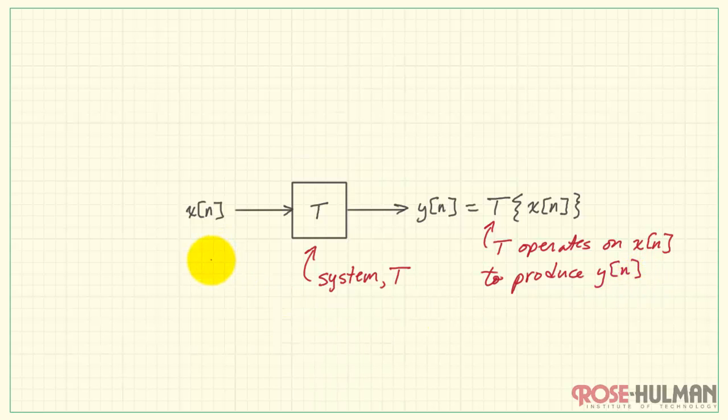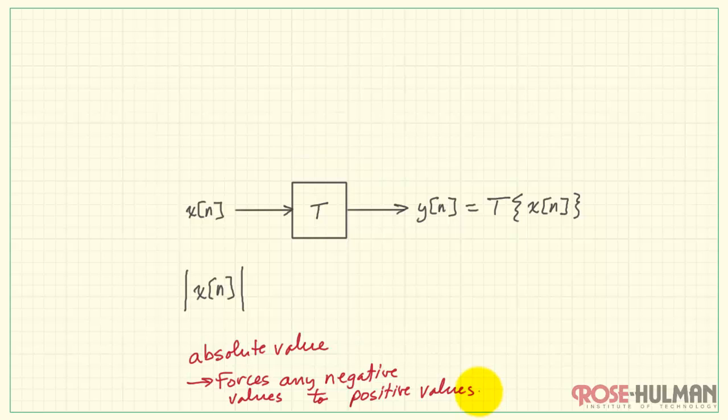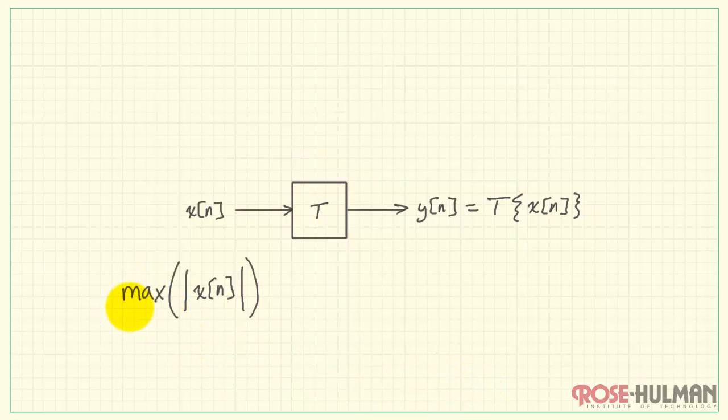Now, we're investigating here the notion of whether or not the system is stable. And to develop that idea, let's begin by considering the input. I'll form the absolute value of the input sequence. The reason for that, it forces any negative values to positive values. Then I want to identify the maximum absolute value of this input sequence.